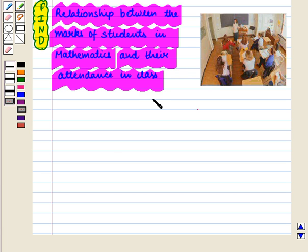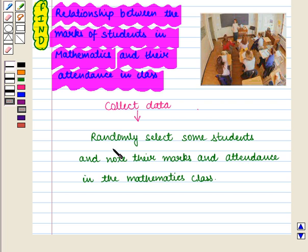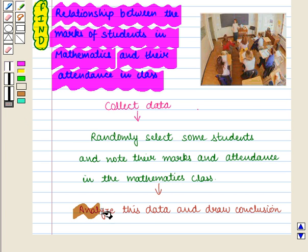For this we need to collect data. For collecting data we need not see the marks and attendance of each student in the class. We will randomly select some students and note their marks and attendance in the mathematics class. Then we will analyze this data and draw our conclusion.